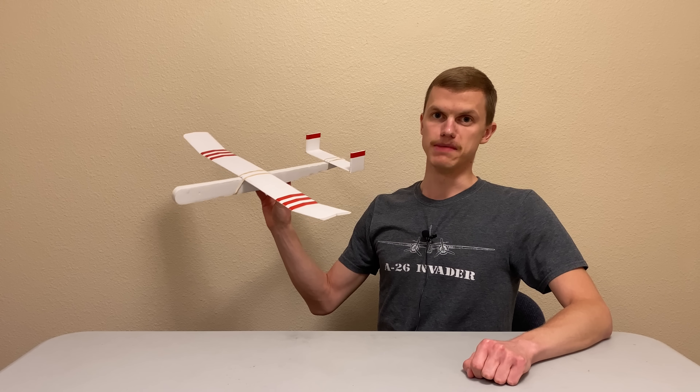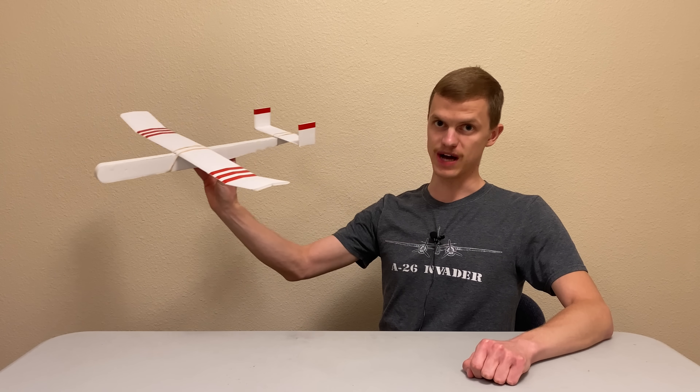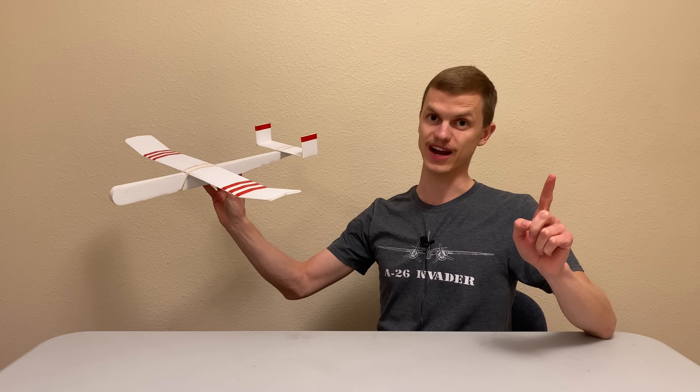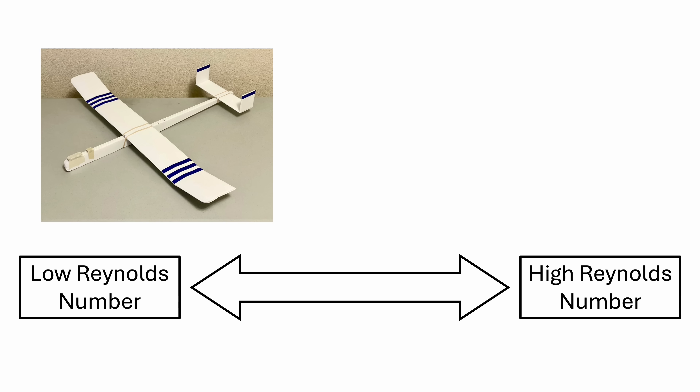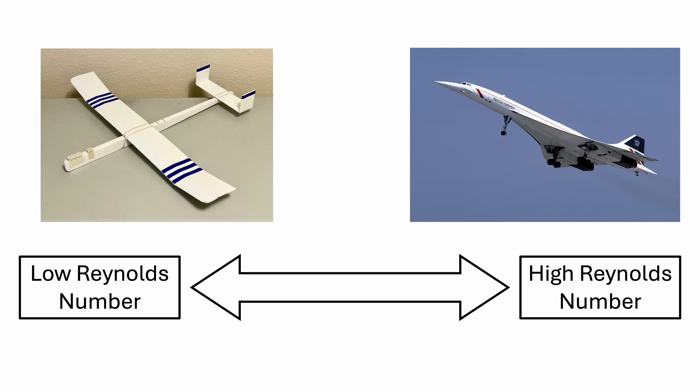This means that to make our planes fly as far as possible, we need to minimize the drag coefficient. In our last video, we learned about the Reynolds number, and we learned that small airplanes flying slowly have low Reynolds numbers, and big airplanes flying fast have high Reynolds numbers. At this point, however, we ran into a problem.